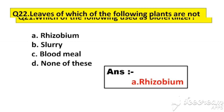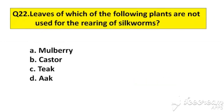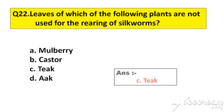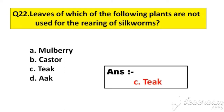Question number 22. Leaves of which of the following plants are not used for the rearing of silkworms? Option A: Mulberry. B: Castor. C: Teak. D: Oak. The right answer is option C, Teak.